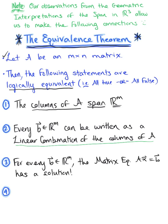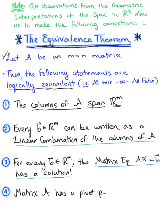If for every vector B in Rᵐ the matrix equation has a solution, what does that tell us about matrix A? Matrix A must then have a pivot position in every row. So our final logical equivalence is that matrix A has a pivot position in each row.